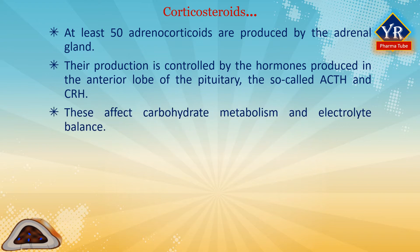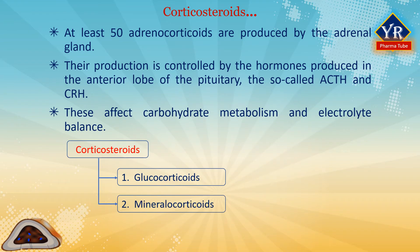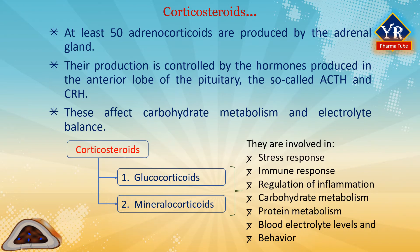These affect carbohydrate metabolism and electrolyte balance. Two main classes of corticosteroids are glucocorticoids and mineralocorticoids. They are involved in a wide range of physiological processes including stress response, immune response, regulation of inflammation, carbohydrate metabolism, protein metabolism, blood electrolyte levels, and behavior.